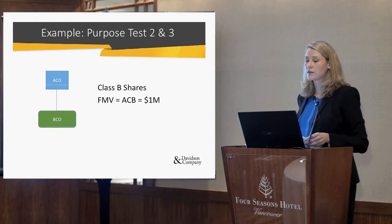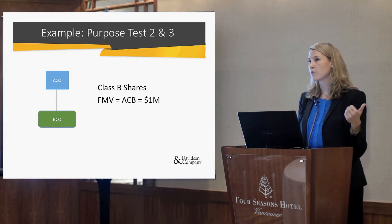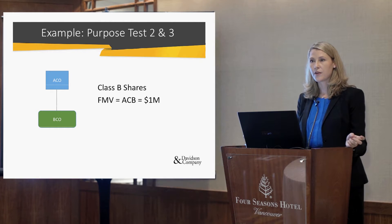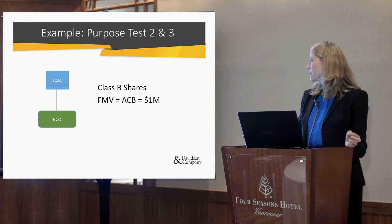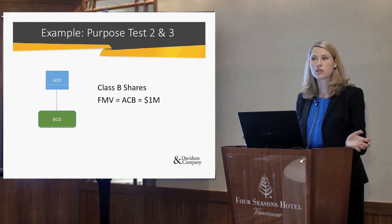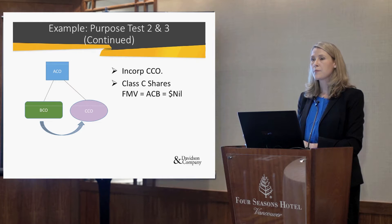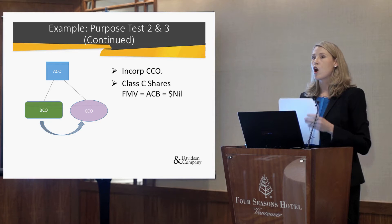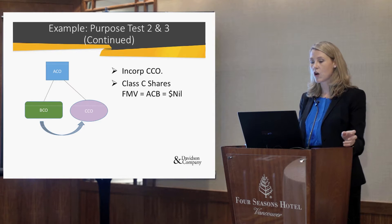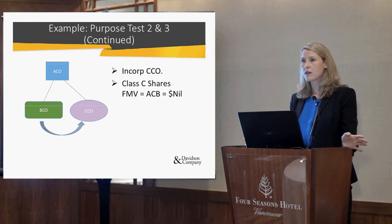Let's look at an example covering purpose tests number two and three — the reduction in fair market value and the creation of adjusted cost base. Company A owns all of the shares of Company B, with cost base and fair market value of $1 million. Company A then decides to incorporate a third company, Company C, but for nominal value — so the adjusted cost base and fair market value of Company C's shares is nominal, essentially nothing.